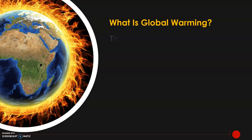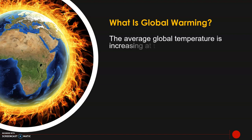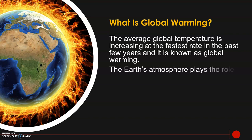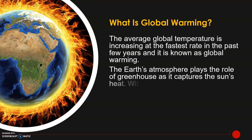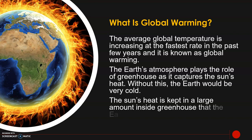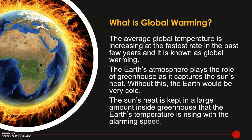What is global warming? The average global temperature is increasing at the fastest rate in the past few years, and it is known as global warming. The earth's atmosphere plays the role of a greenhouse as it captures the sun's heat. Without this, the earth would be very cold. The sun's heat is kept in large amounts inside the greenhouse, causing the earth's temperature to rise at an alarming speed.